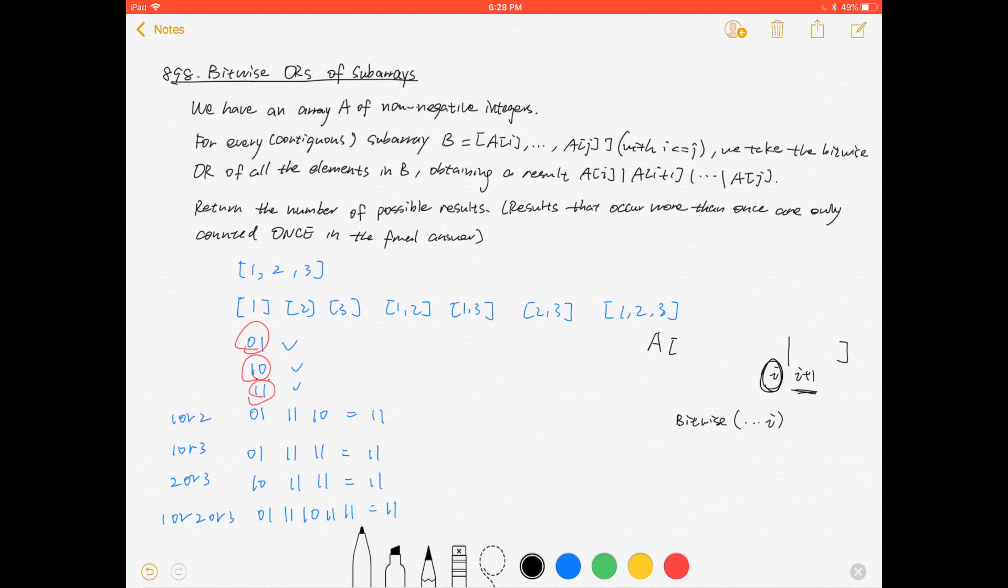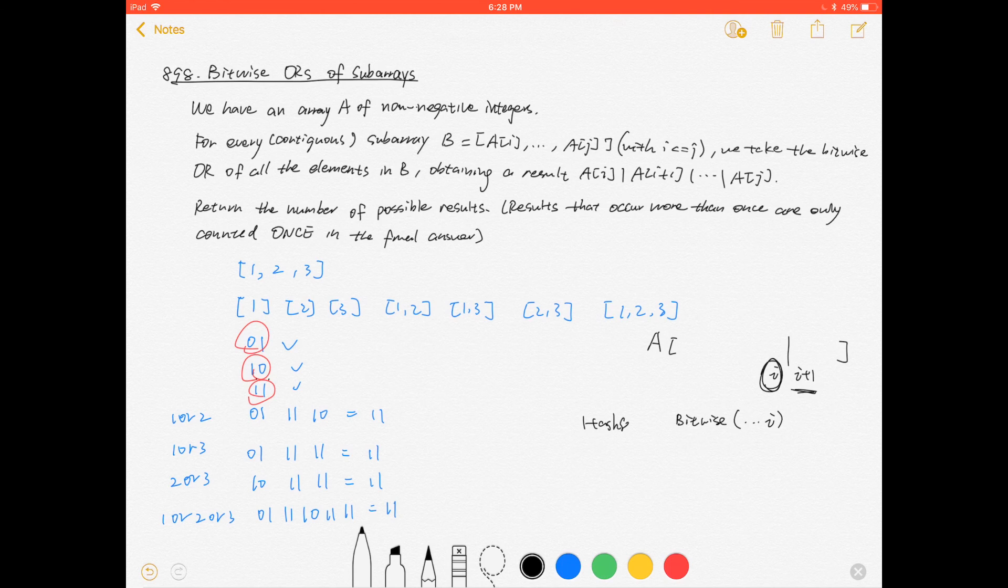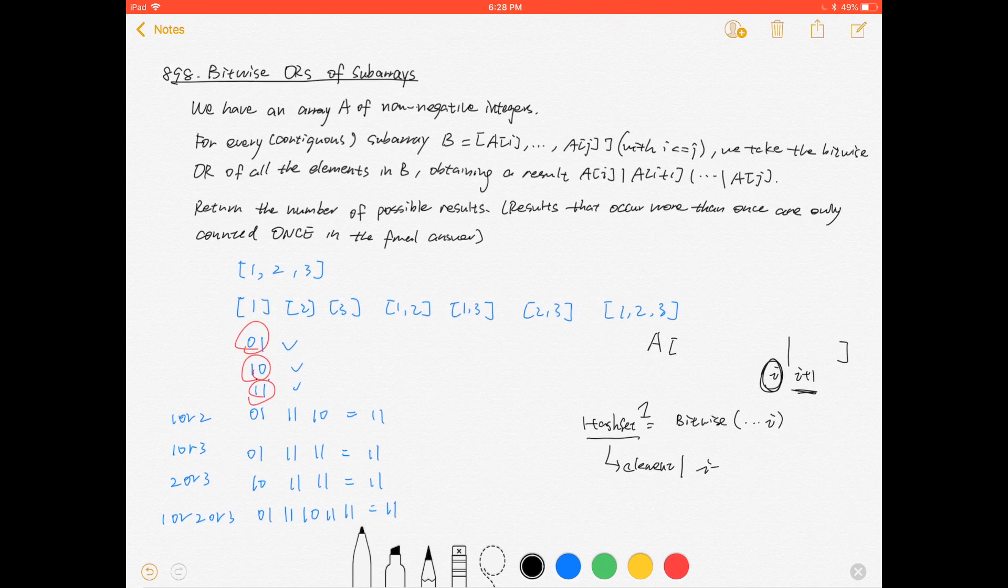Then for a[i+1], what we're going to do is return a hash set where we OR every element in this hash set with this unique number a[i+1].